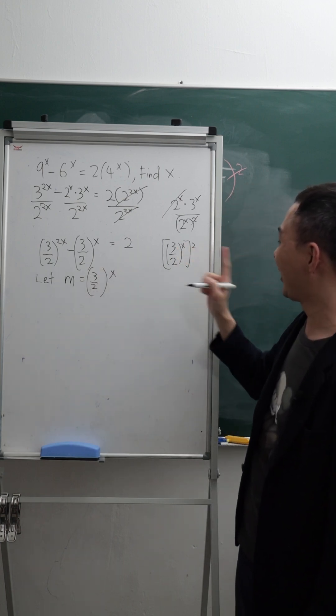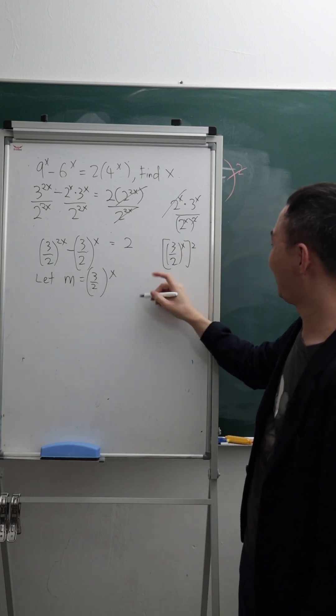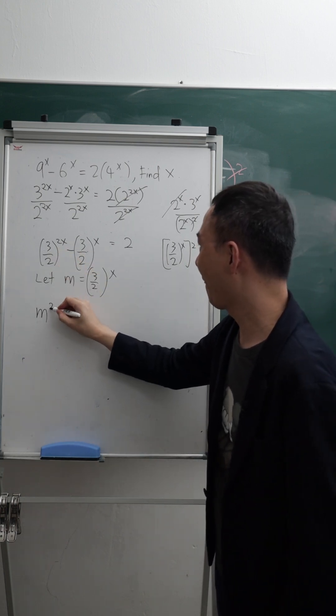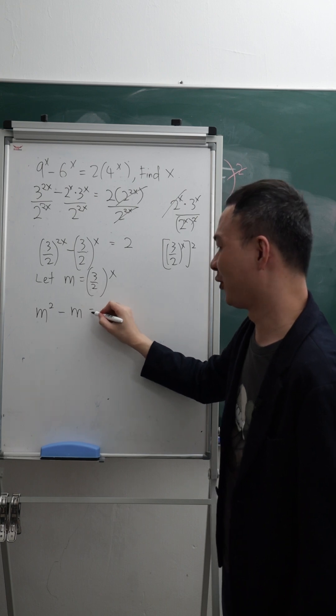Then because this one, you can see, this is m squared. If I let this one should be m power of 2, then here I have m squared minus m equals to 2.